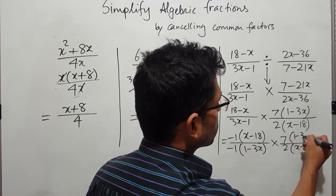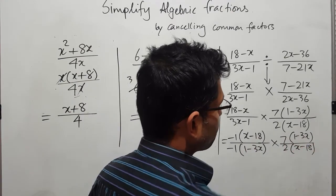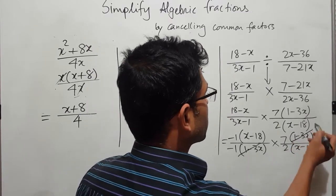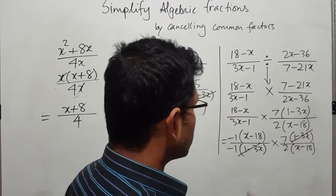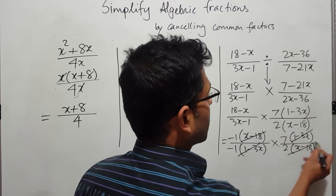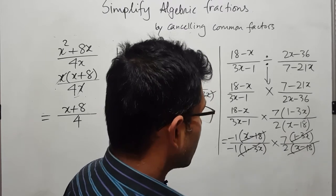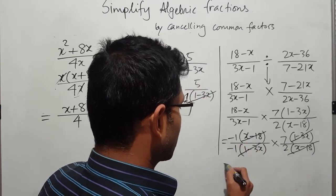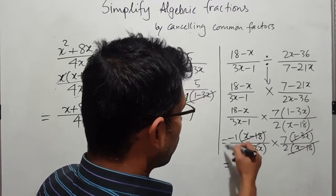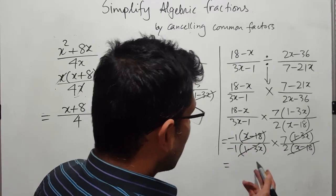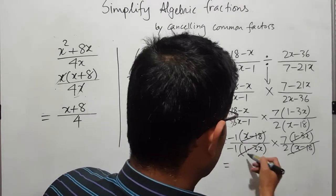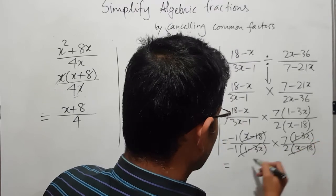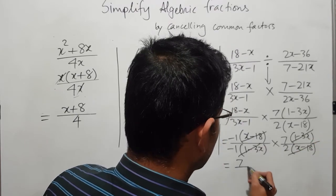Now (1 minus 3x) cancels with (1 minus 3x), (x minus 18) cancels with (x minus 18), and the two minus 1 factors cancel each other — so there is no minus sign remaining. What we are left with is 7 over 2.